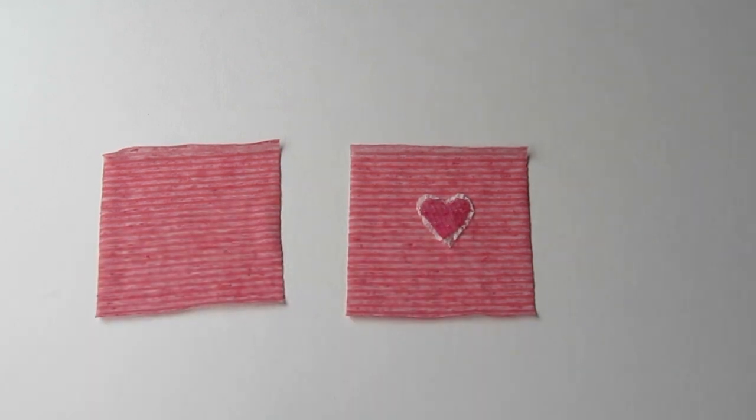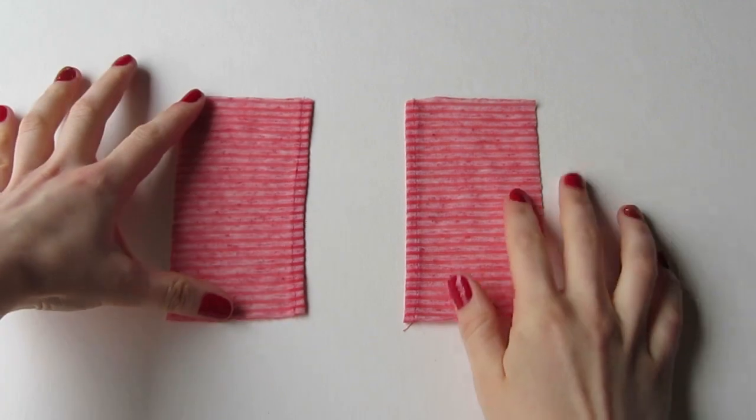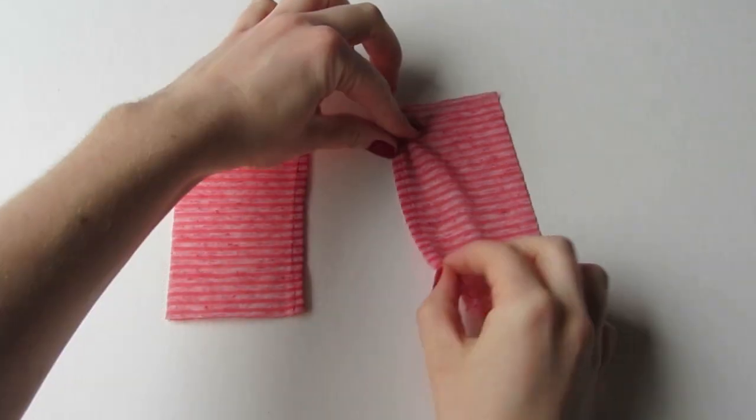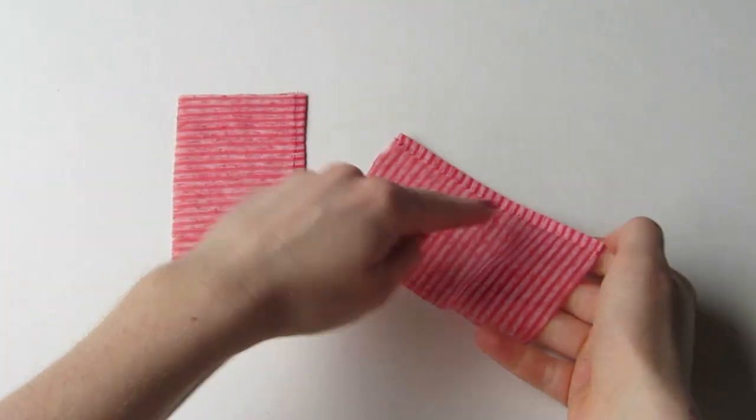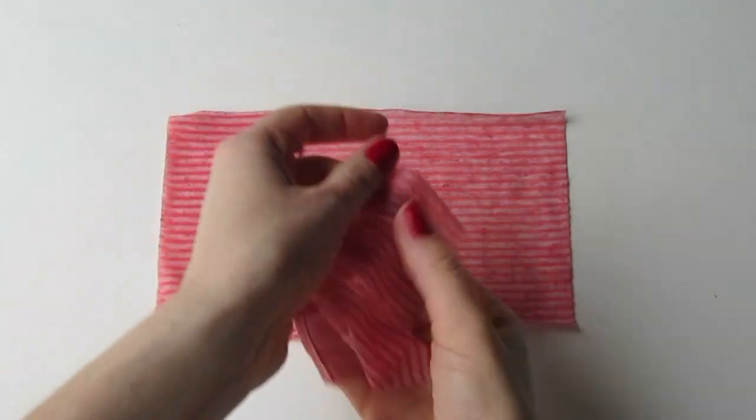First off, you're going to hem the center front opening. So take your two front pieces, press under one long edge a quarter inch twice, and then stitch it down. Lay your front pieces onto your back piece, making sure you have right sides together and that the hemmed edges are pointing in.